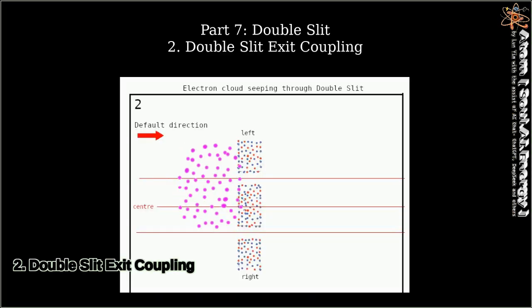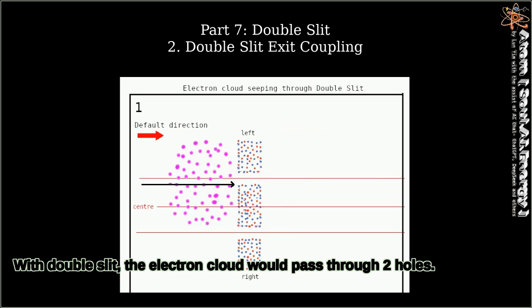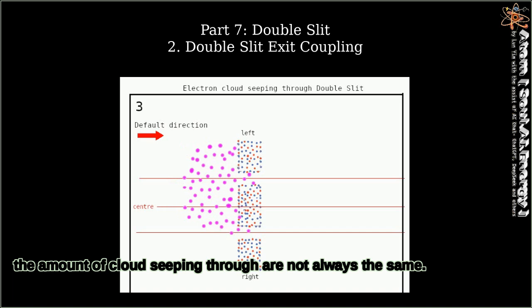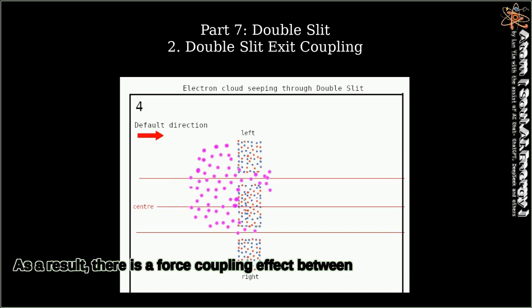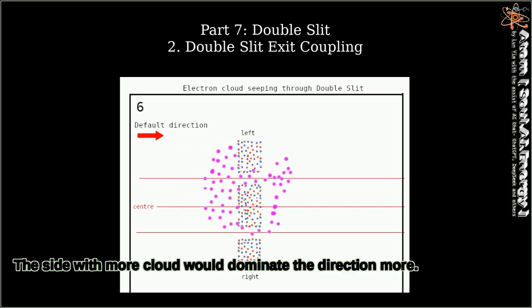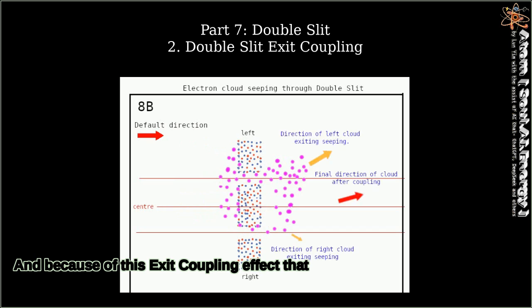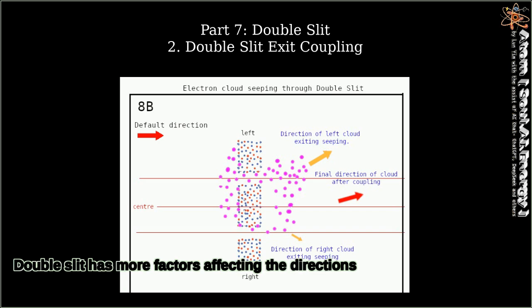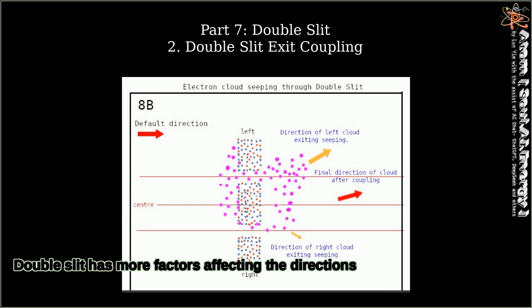2. Double Slit Exit Coupling. With double slit, the electron cloud would pass through two holes. Although the same electron cloud seeps through two holes together, the amount of cloud seeping through is not always the same. As a result, there is a force coupling effect between the left and the right cloud. The side with more cloud would dominate the direction more. And because of this exit coupling effect that the single slit doesn't have, their screen patterns are different. Double slit has more factors affecting the directions, so it has a wider pattern.